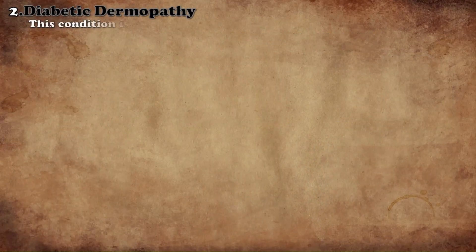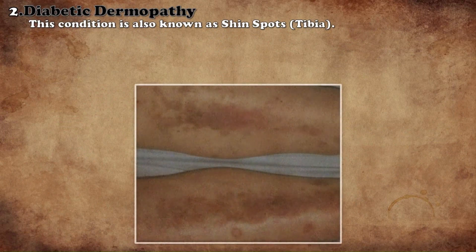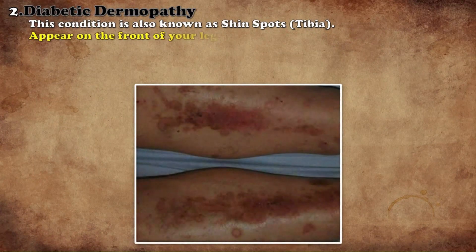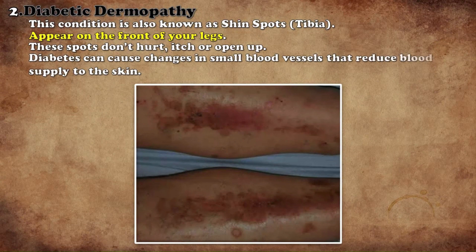Diabetic dermopathy appears as spots on the front of your legs, on which there is neither pain nor itching. The main cause of diabetic dermopathy is the reduction of blood supply to the skin of the small blood vessels.